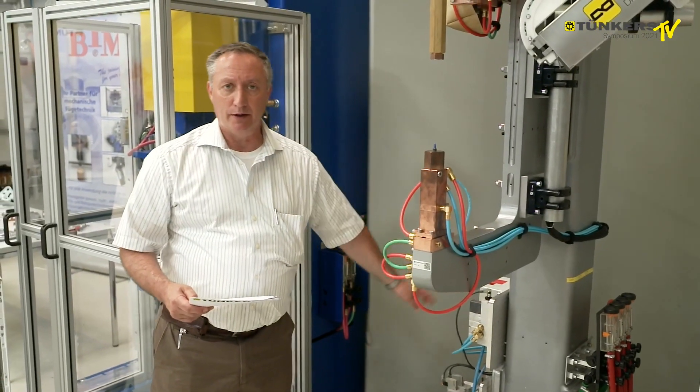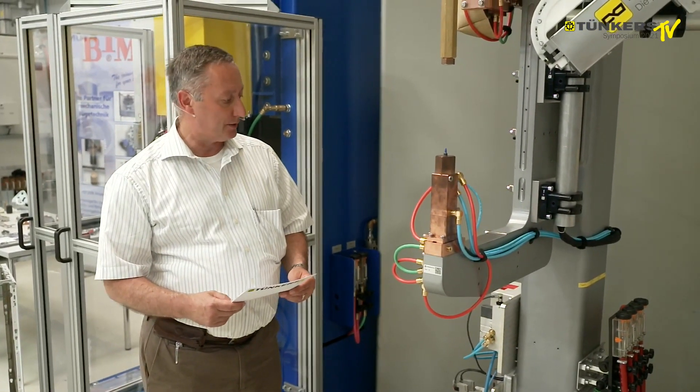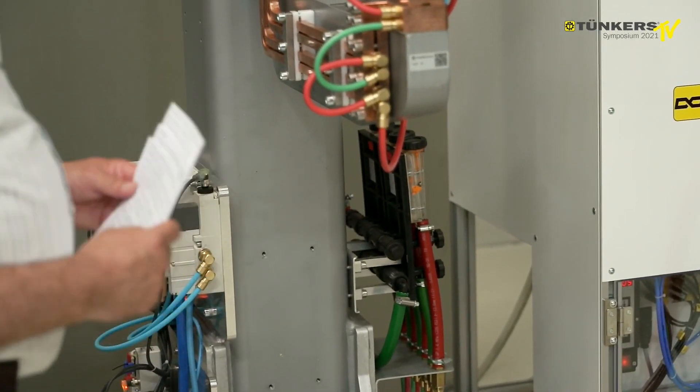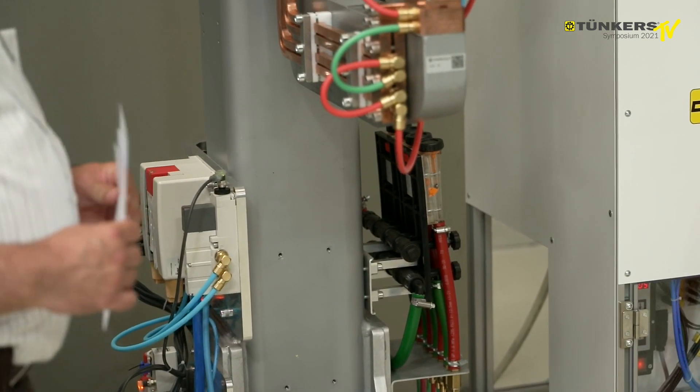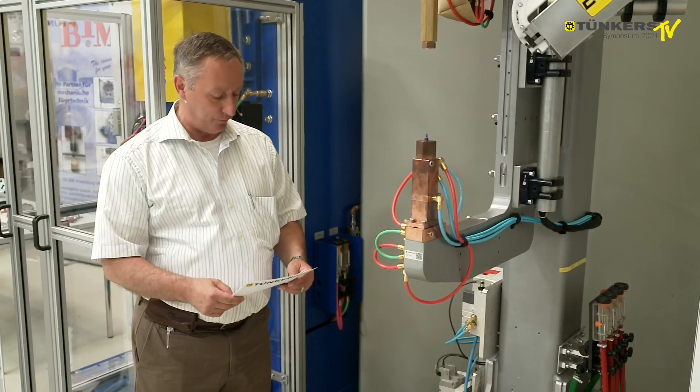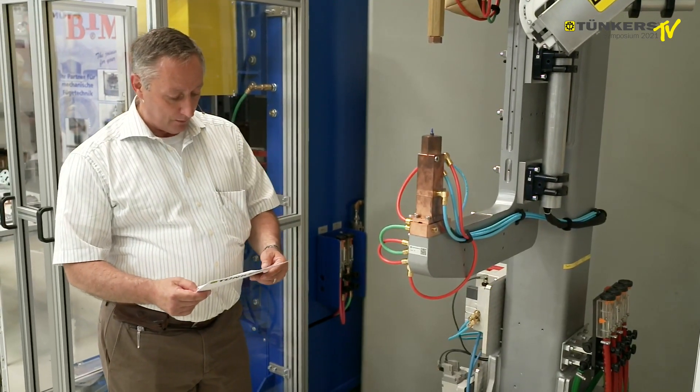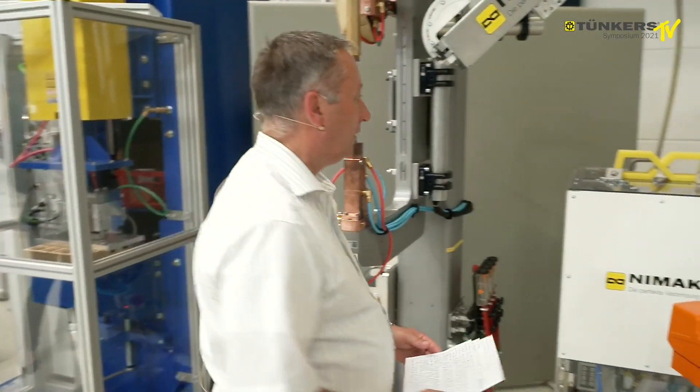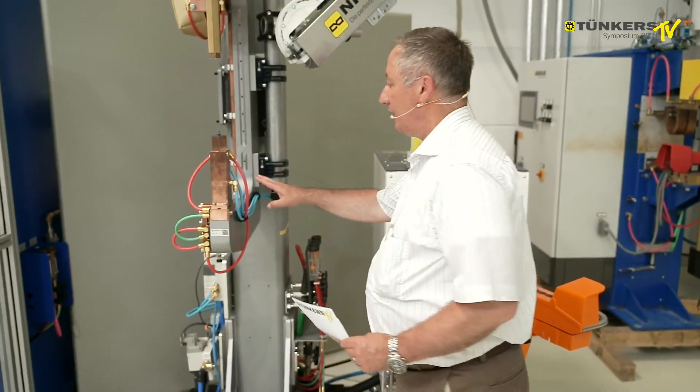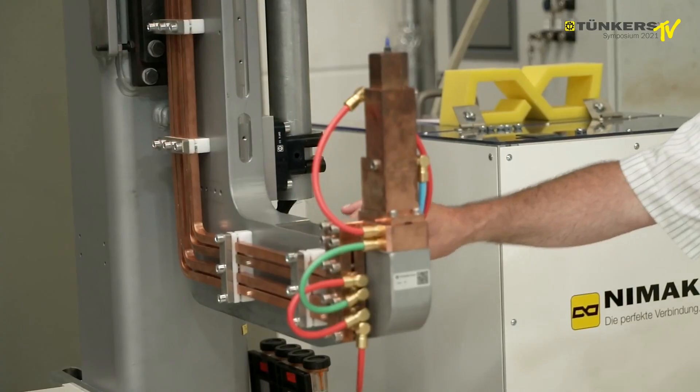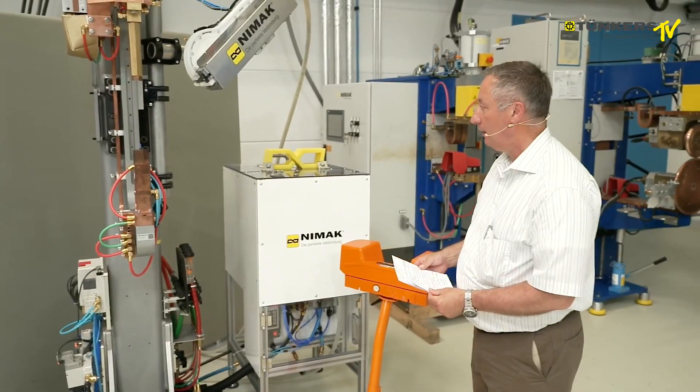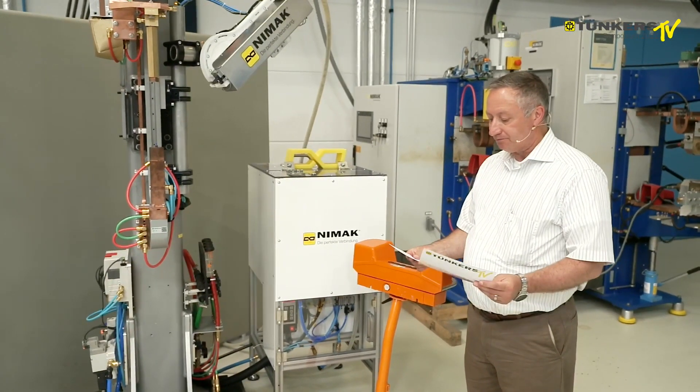Furthermore, we have a pneumatic unit, which has now reached performance level D, cooling water distribution with the individual cooling in separate control as well as a flow-through measurement. Furthermore, Niemak feeding unit, and last but not least, the Tunkers C-frame from the forming technology modular kit.